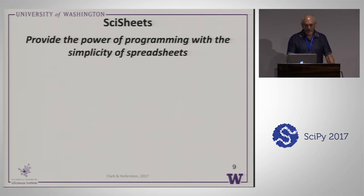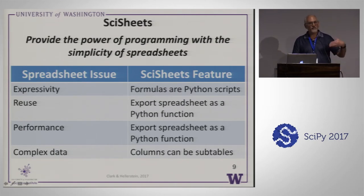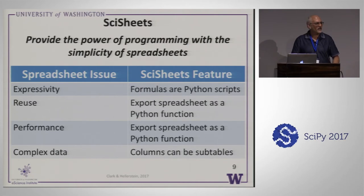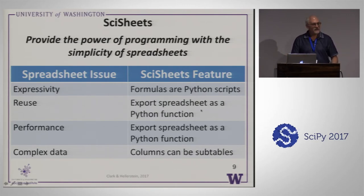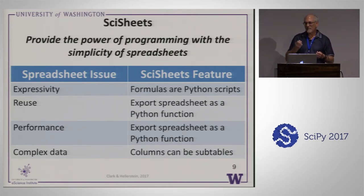Our tagline is Power of Programming with the Simplicity of a Spreadsheet. We focus on a few features addressing expressivity, reuse, performance, and complex data. Instead of cryptic spreadsheet-style formulas, you use Python — any Python expression or statement is available, including imports and eval. And secondly, you can take your spreadsheet and export it as a Python function in a module. That gives two benefits: a programmer can use it because it's Python, and you can reuse it in calculations since you're writing Python as your formula language.